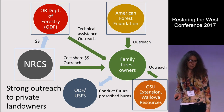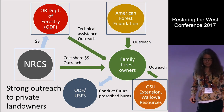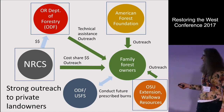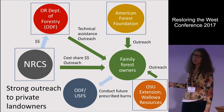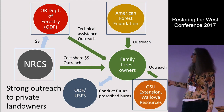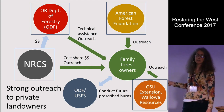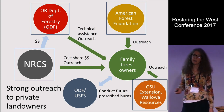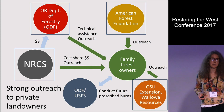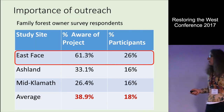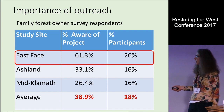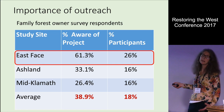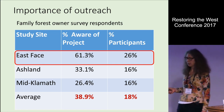Strong outreach to private landowners makes a real difference. In the East Face case, family forest owners were being reached by NRCS, the Department of Forestry, Oregon State University, Willauer Resources (a local community group), and the American Forest Foundation — which picked this site to pilot how to better reach out to and engage landowners in forest management. As a result, the East Face project had at least twice as many people aware of the project as the other study sites, and a greater number of participants among survey respondents.